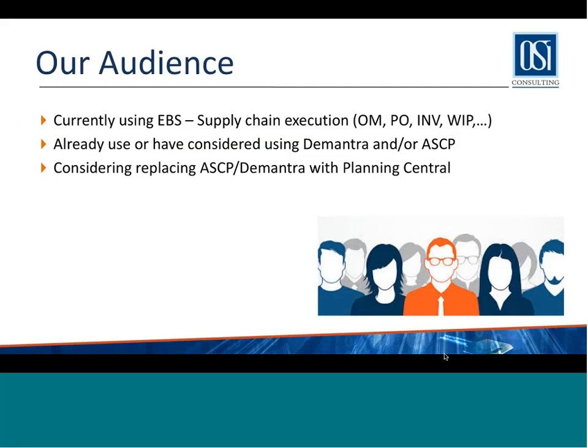It's a pretty large topic. Here's an overview of our audience — most of you, if not all of you, use EBS. You use supply chain execution: order management, purchasing, inventory, work in process. You are already using ASCP and/or Demantra for your forecast, and you have either considered replacing ASCP or Demantra with Planning Central, or are looking at implementing Planning Central instead, with Oracle pushing you to implement a cloud solution.